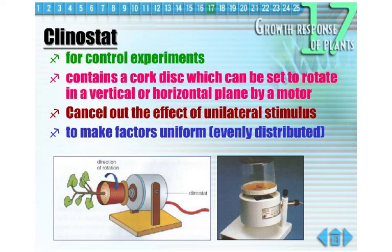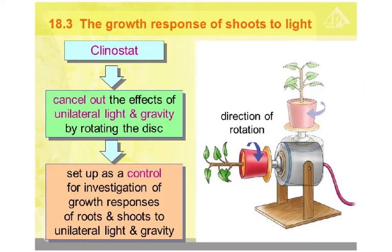In order to investigate the effects of light and gravity on shoots and roots, we have to use an apparatus called a clinostat. A clinostat is used for control experiments. It contains a cork disc which can be set to rotate in a vertical or horizontal plane by a motor, to cancel out the effect of unilateral stimulus and make factors uniform or evenly distributed. It is set up as a control for investigation of growth responses of roots and shoots to unilateral light and gravity.